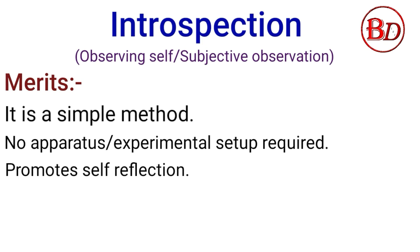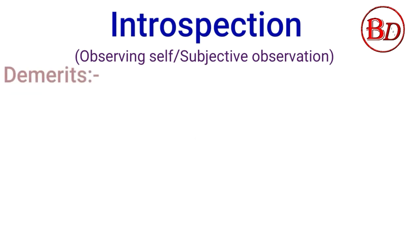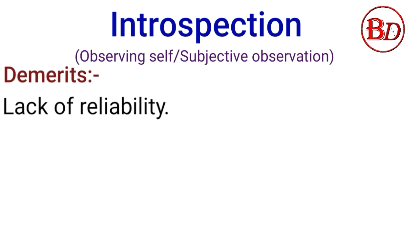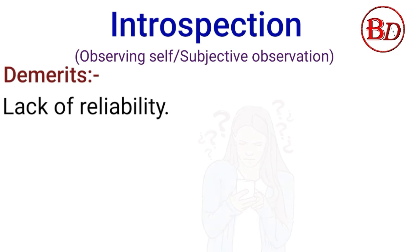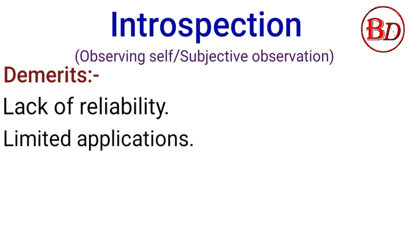It promotes self-reflection — understanding the self is achieved by this method. Observing emotions, thoughts, and experiences helps to understand the conscious mind. Demerits: Lack of reliability — a person may not be able to express his thoughts and emotions in words. He may have understanding of his emotion but may not be able to put it in words, which questions the reliability of this method.